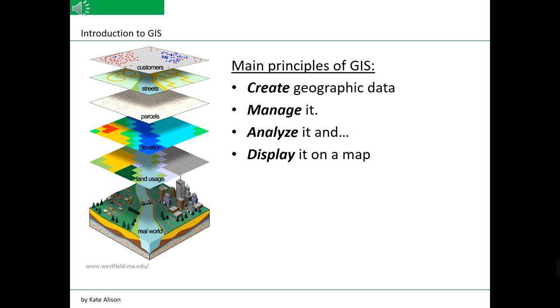Geographic Information System really comes down to just four simple ideas. Create geographic data, manage it, analyze it and display it on the map.